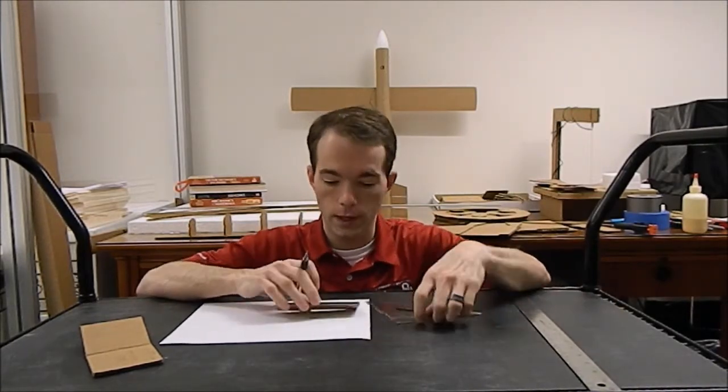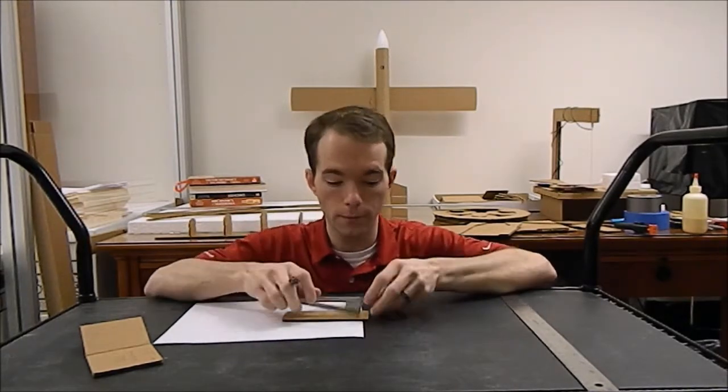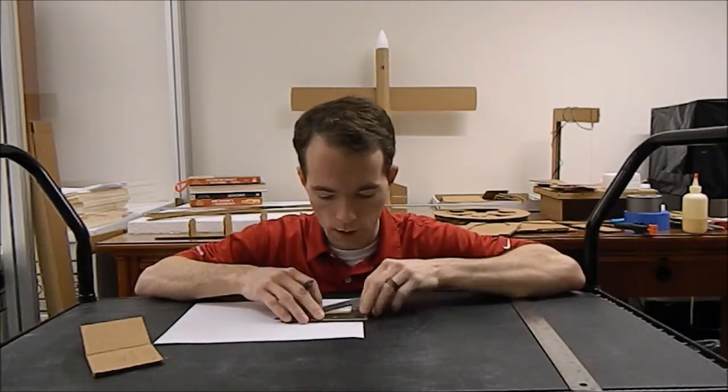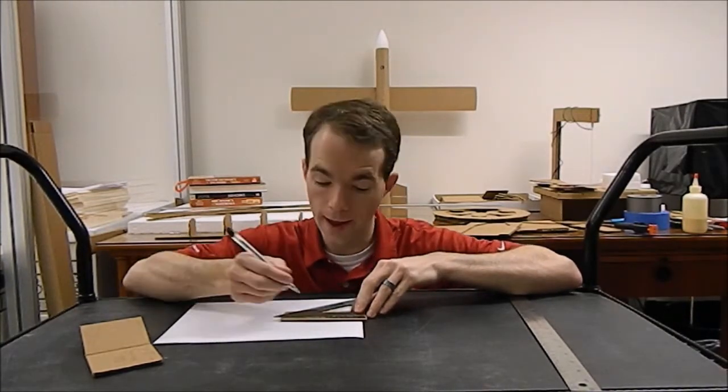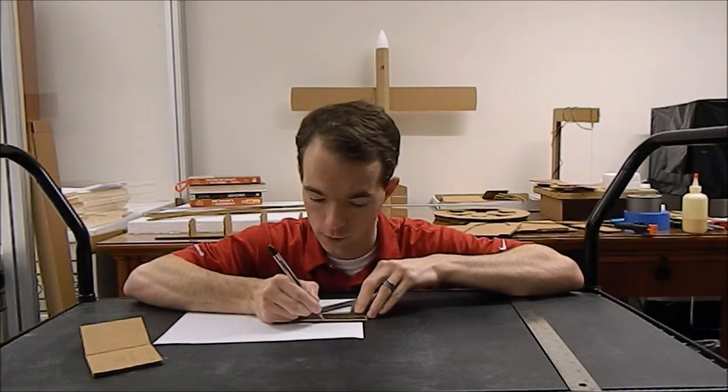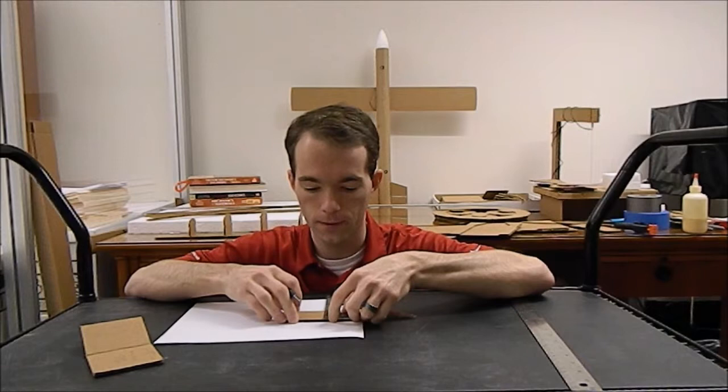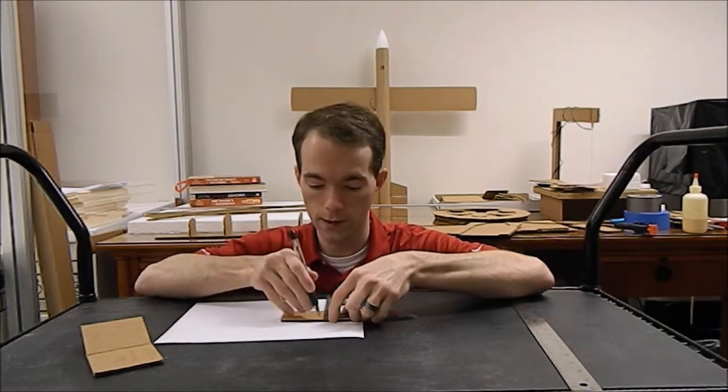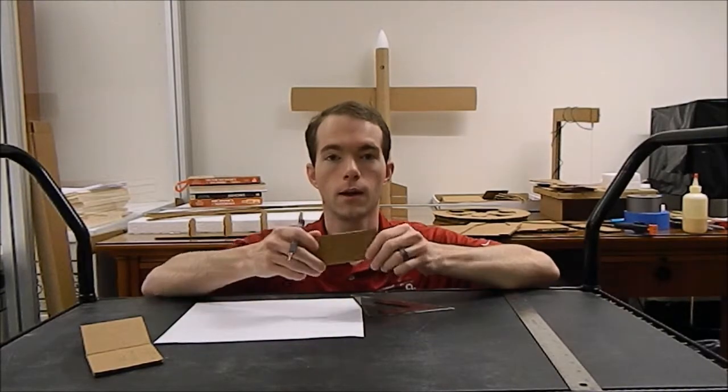What we're going to do is measure halfway up our cardboard, or roughly half, it doesn't really matter. And we're going to draw a perpendicular line. My piece here is five inches so I'm going to go ahead and use two and a half. So we're going to go two and a half up. Then we're going to draw a perpendicular line across our cardboard, like so.